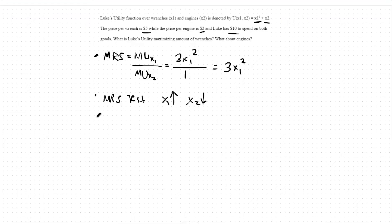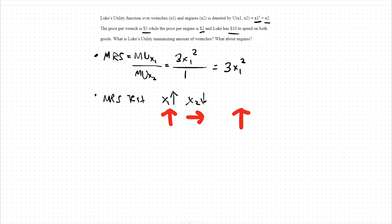Let's analyze this MRS. In this case, our MRS is 3x1 squared. As x1 increases, our marginal rate of substitution increases. As x2 decreases, nothing happens to our MRS — I'll denote that as a horizontal arrow. This means that put together, we have a net increasing effect on our MRS. So our marginal rate of substitution is increasing.